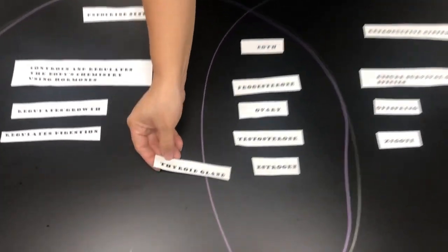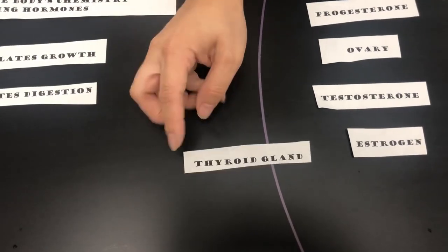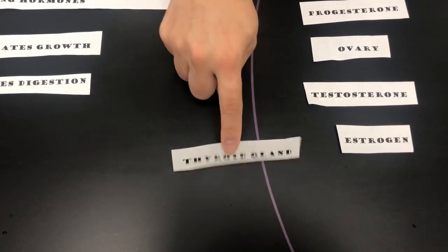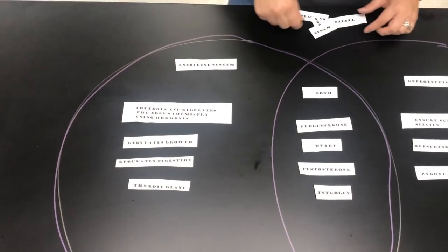Thyroid gland. This gland, remember, was discussed—it's found in kind of our throat area, neck, that produces hormones. This is part of the endocrine system.